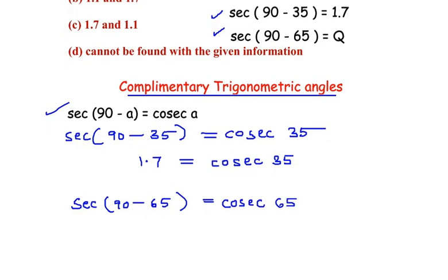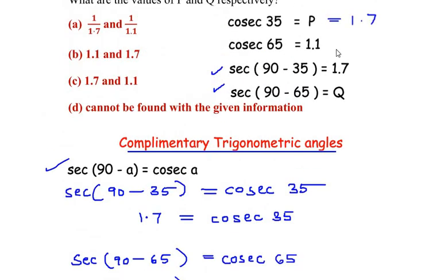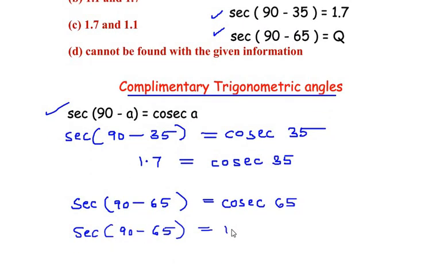So here we can just write sec of 90 minus 65 is equal to cosec of 65, the value was given as 1.1. So this is 1.1 which was your Q value.